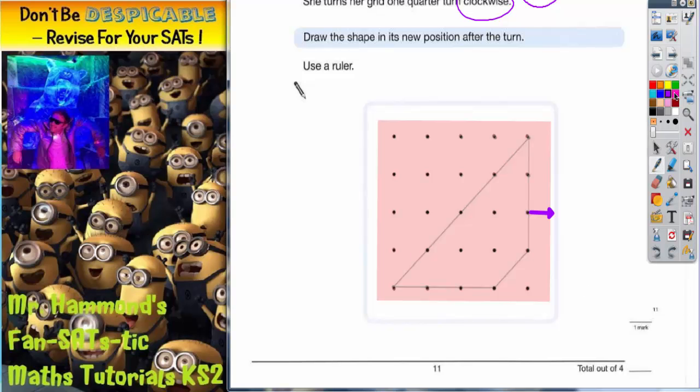So it's just then a matter of basically slightly peeling back the tracing paper and drawing in the lines onto the grid. Because obviously you can't draw through the tracing paper. So you have to peel it back and draw the lines straight on. And that's the answer.